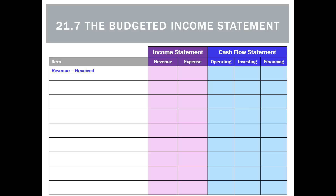For example, revenue received would be classed as revenue, and because we've already received the money, it would also be an operating activity. However, accrued revenue — earned but not yet received — would be a revenue but would not appear on the cash flow statement yet.